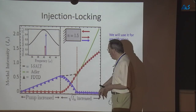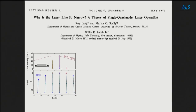Part of the motivation for this part of the talk is this famous paper by Scully, Lange, and Willis Lamb — 'Why is the laser line so narrow: a theory of single quasimode laser operation.' It's a pretty good example of people trying to do non-Hermitian physics without admitting it's non-Hermitian. We've got these infinitely sharp lines within the semi-classical theory.